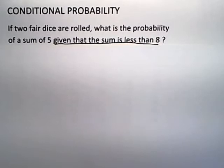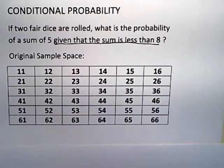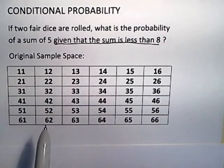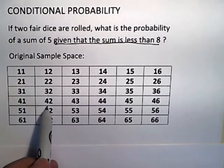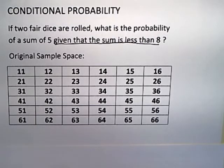As always, we start off with the original sample space before the condition is applied. For a two dice problem, as you know, always write it as a 6x6 array with 36 possible equally likely outcomes. The first number is the roll of the first die and the second number is the roll of the second die.